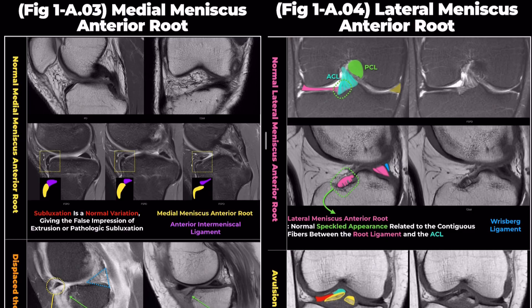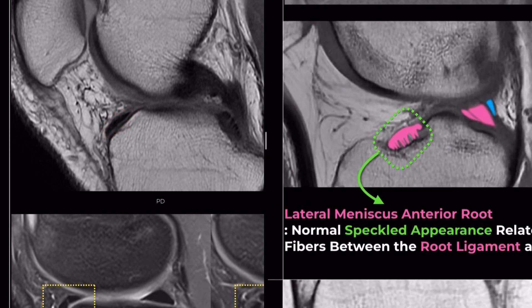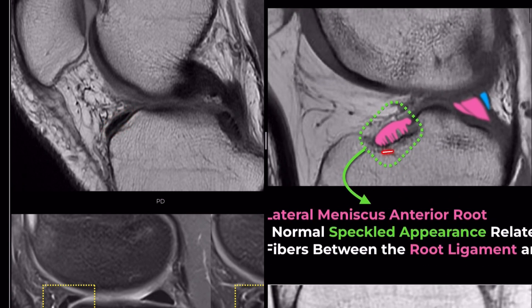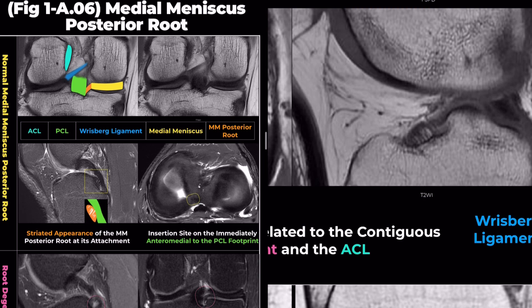In contrast, the anterior root of the medial meniscus consists of a single fiber bundle. The anterior root of the lateral meniscus often exhibits a distinct fissured appearance, similar to the posterior root of the medial meniscus.